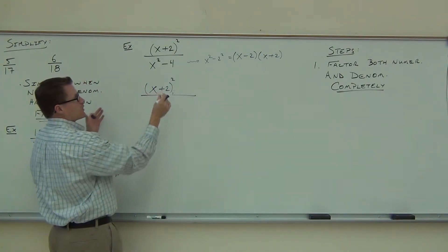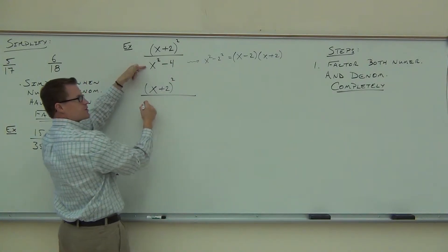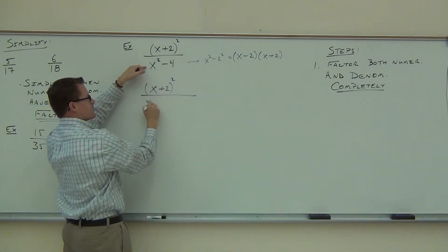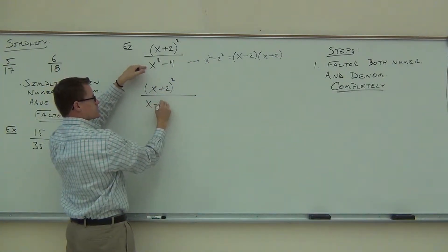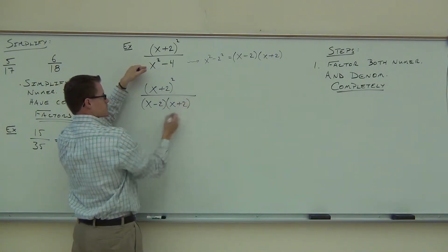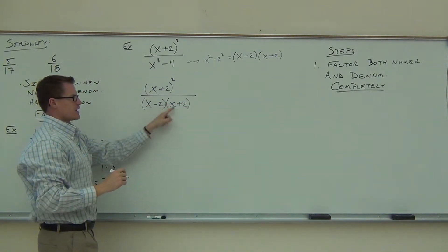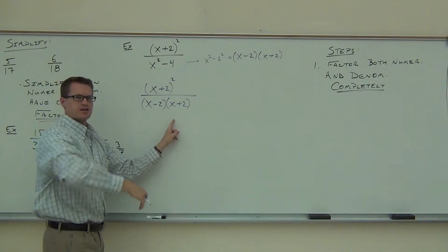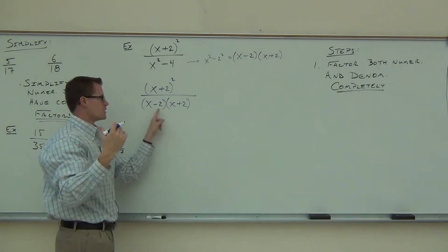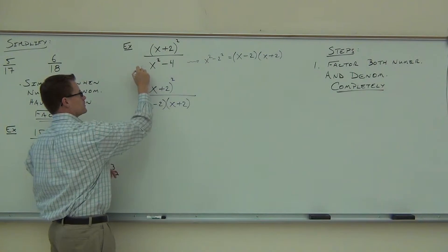So we go: I know that x squared minus 4 — and you're going to be able to do this without this step after a while — is x minus 2 times x plus 2. We can double check it: x squared plus 2x minus 2x simplifies to 0, minus 4, and that's exactly what we have here.